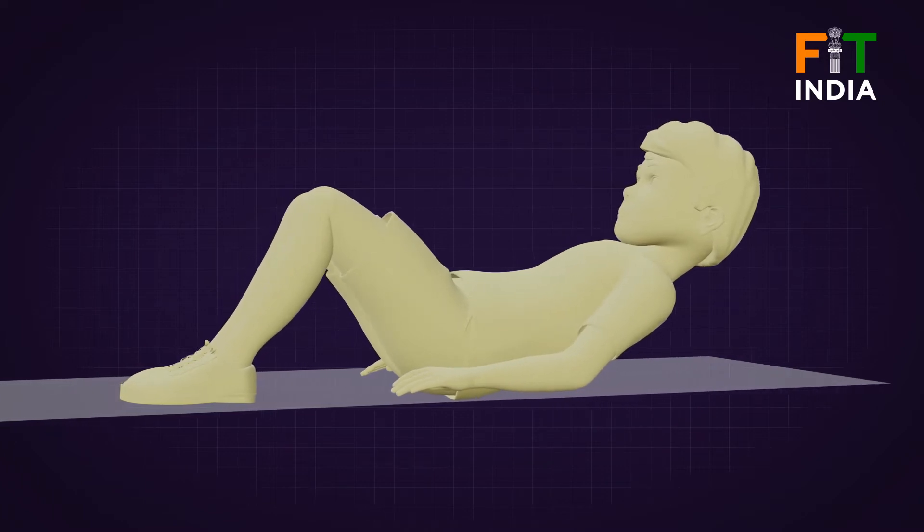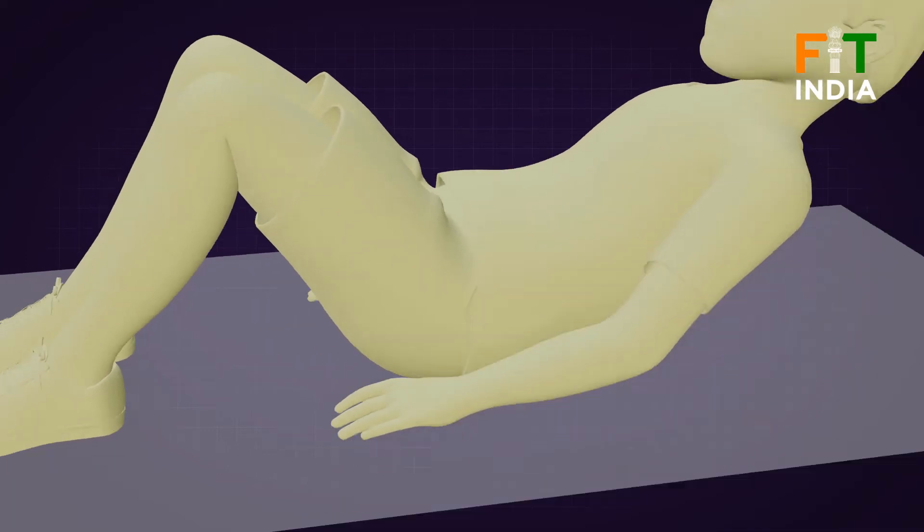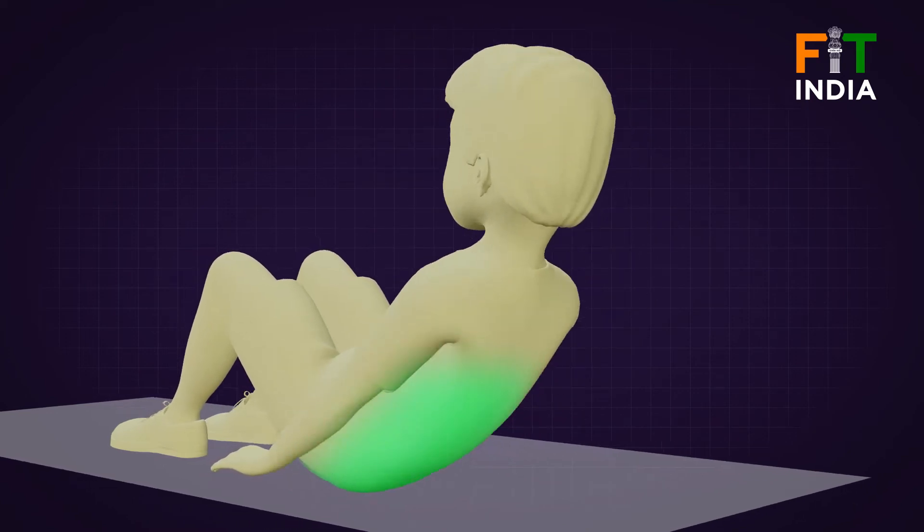The partial curl-up test measures abdominal muscular strength and endurance of the abdominals and hip flexors, which is important in back support and core stability.